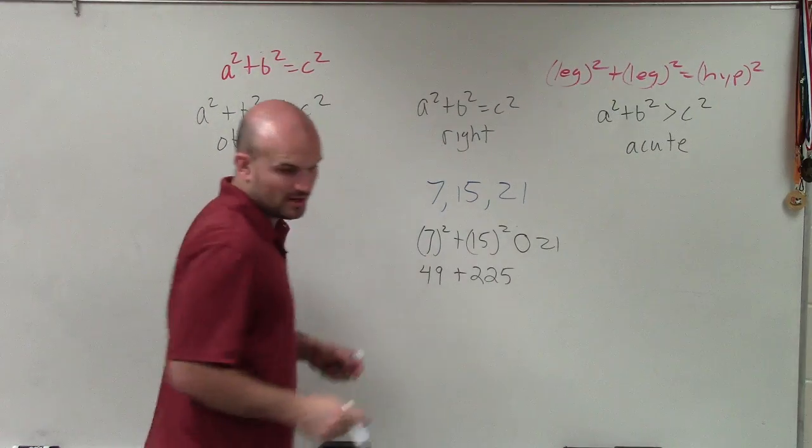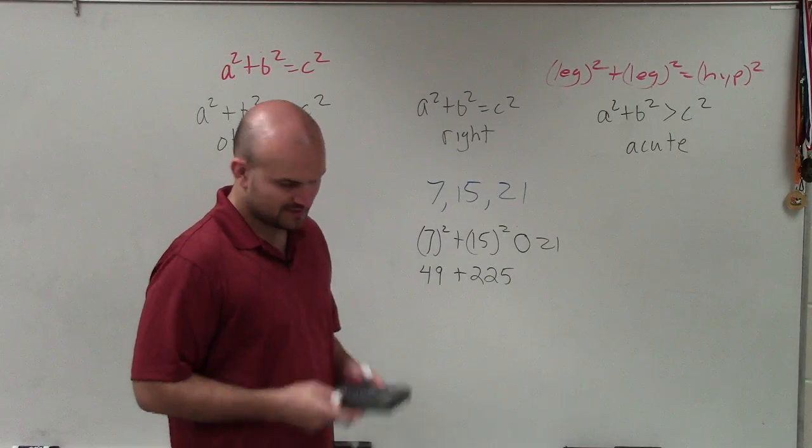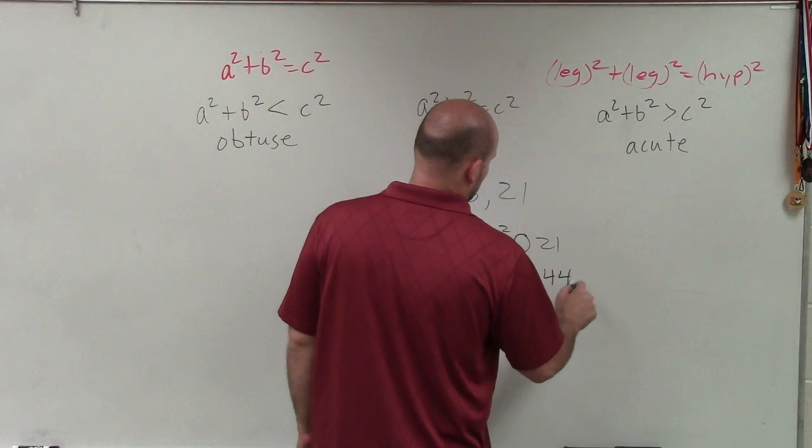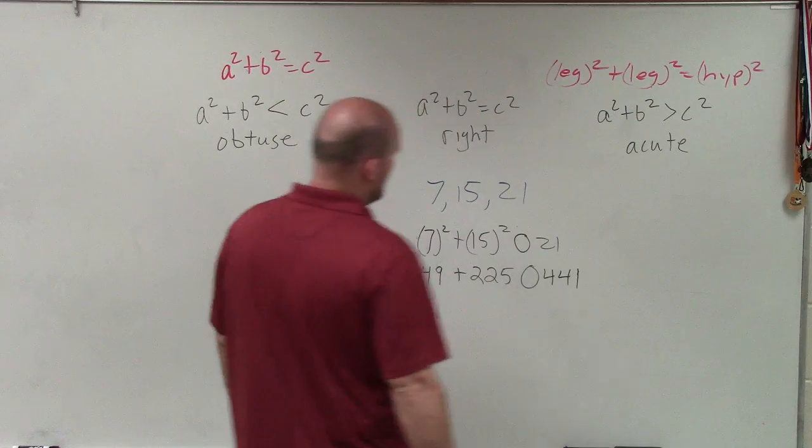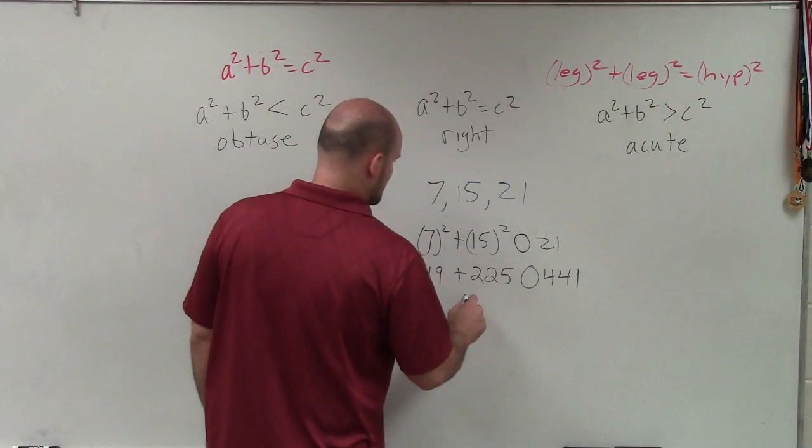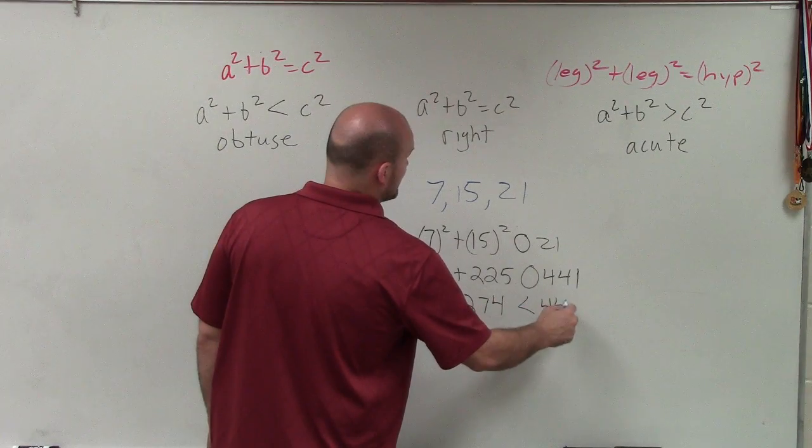And 21 squared, I do not know, but I should, because 20 times 20 is 400, so 21 squared equals 441. So therefore, that's going to be 49 plus 225, which is 274. So 274 is less than 441.